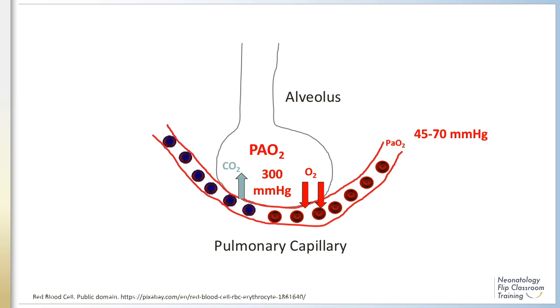The arterial partial pressure of oxygen, or PaO2, in healthy children and adults is 100 millimeters of mercury at sea level. In neonates, it is 45 to 70 millimeters of mercury, rarely higher because of shunting.